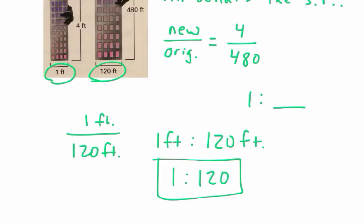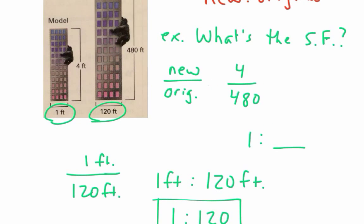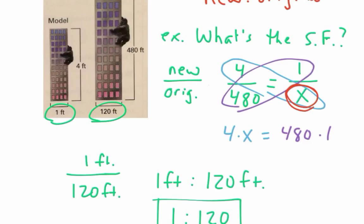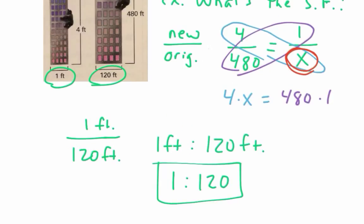If instead it was 1 inch equals 120 feet, you'd have to include that in your final answer. If you didn't have that nice way, you could take 4 over 480 and change it into a nice scale factor. Say you want it to be 1 to something — put the 1 there, and cross-multiply: 4x equals 480 times 1. To get x by itself, divide by 4, and 480 divided by 4 gives us 120. So it'd have to be 120 right there.